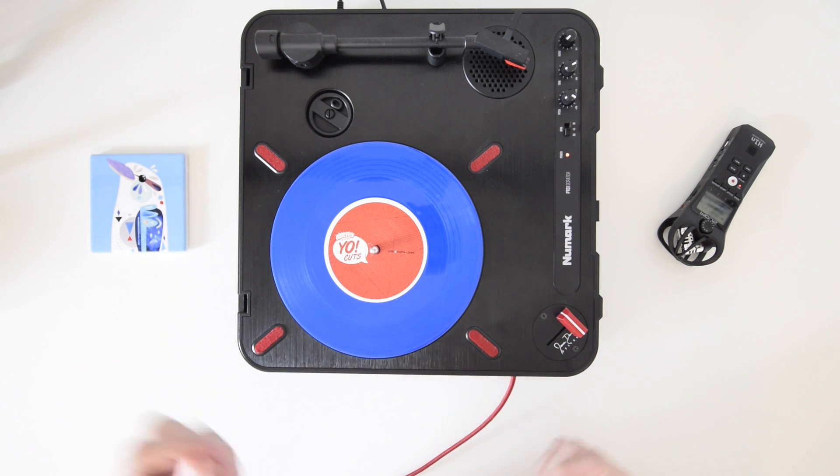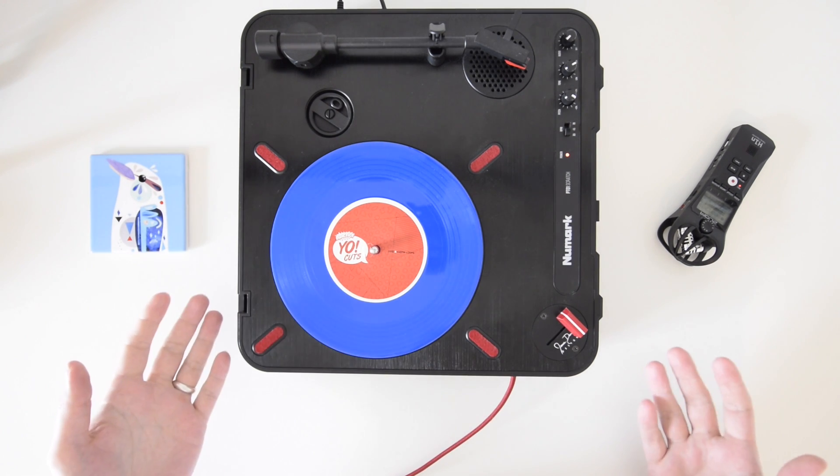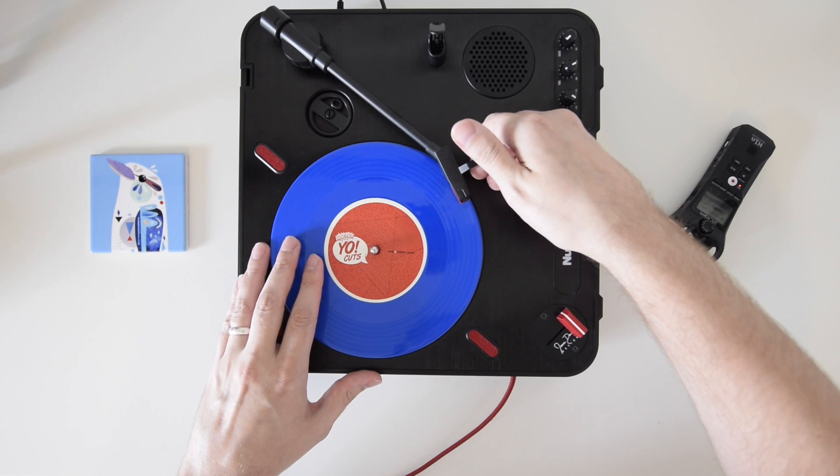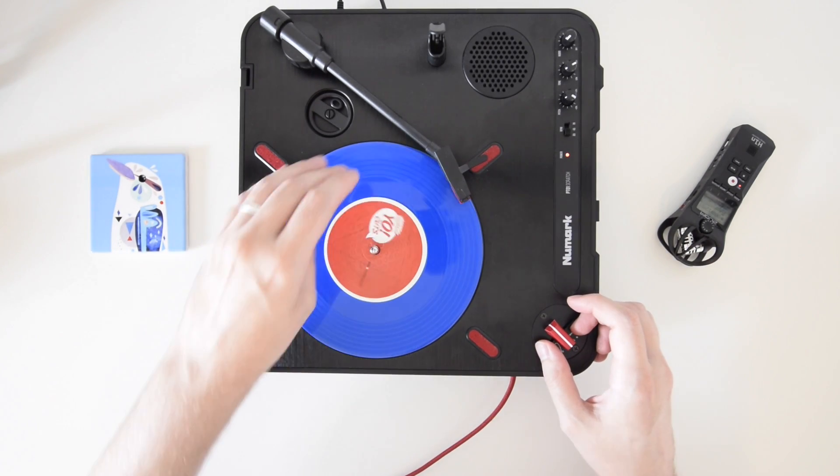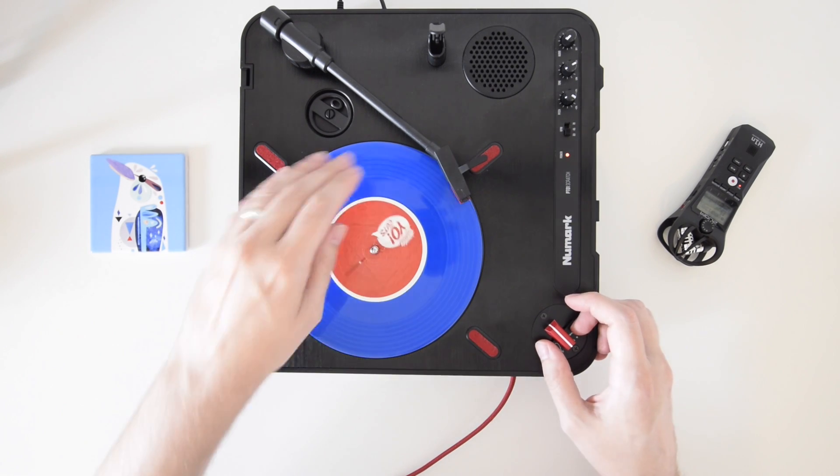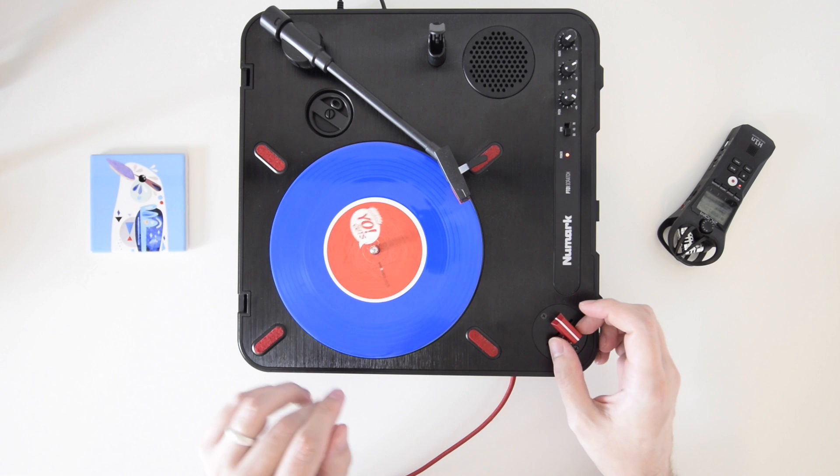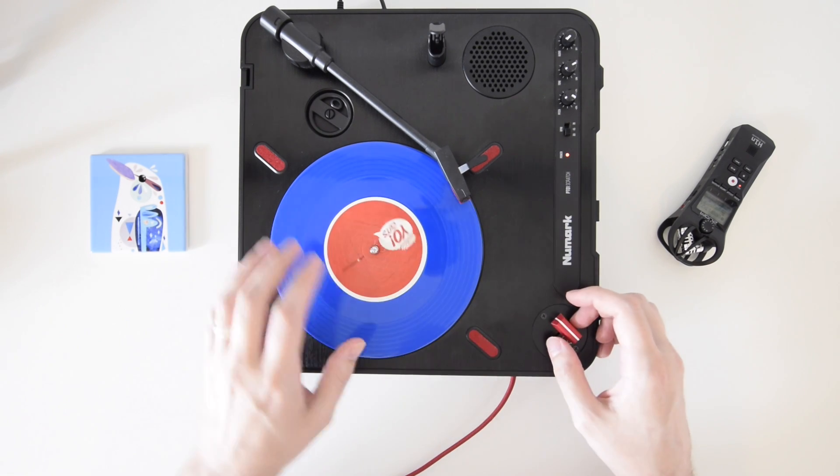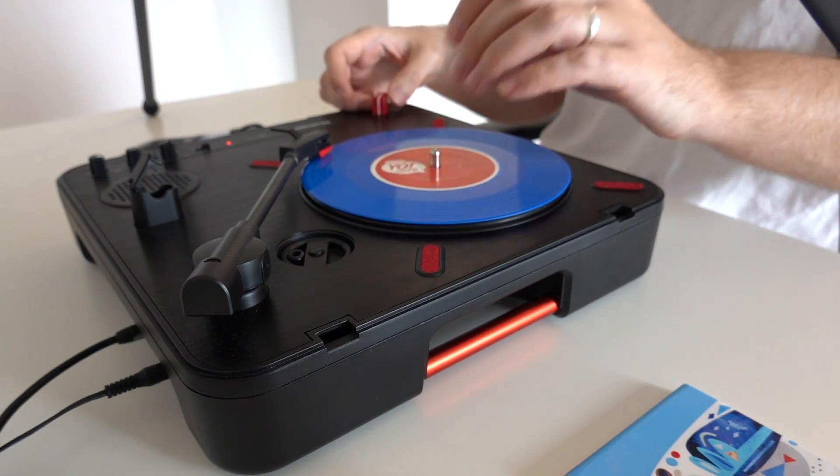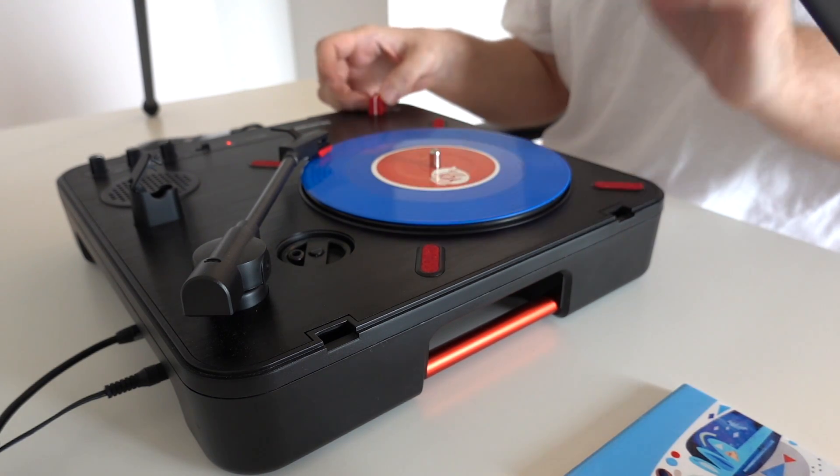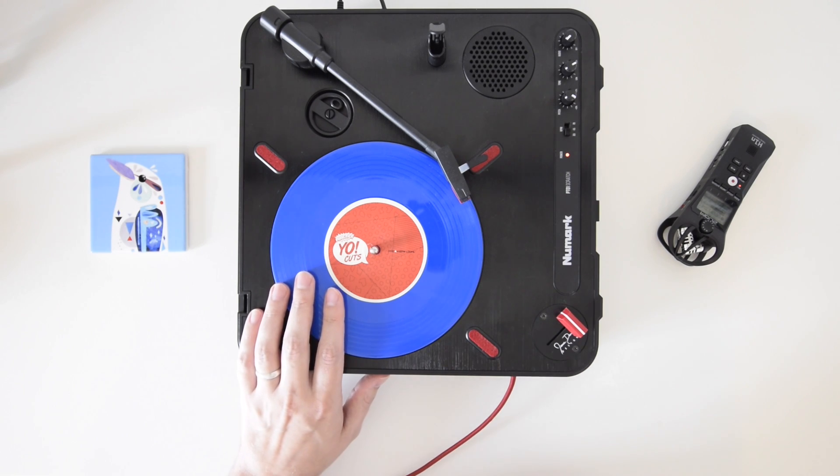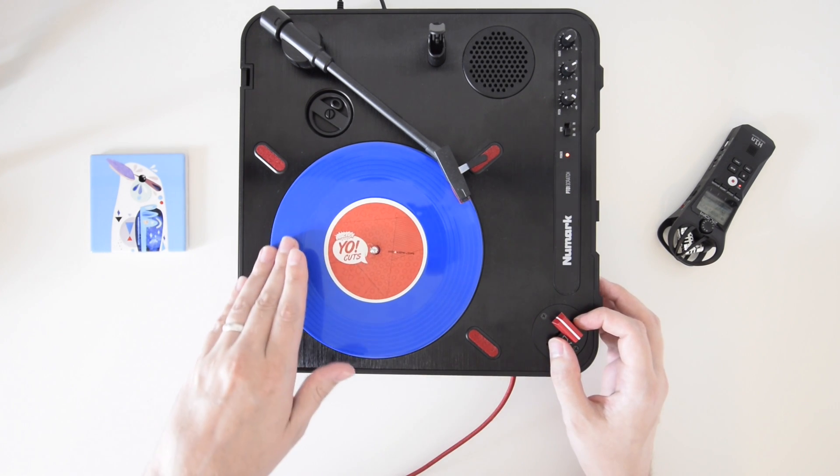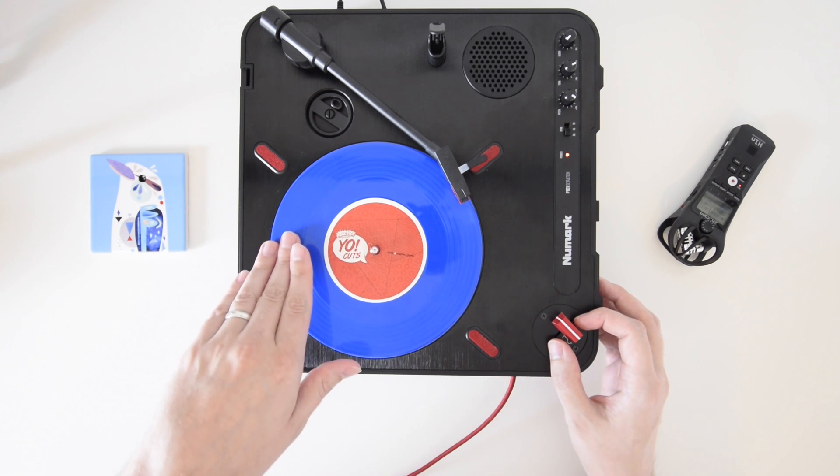Now when it comes to scratching the first thing you're gonna want to do is find a sample that you want to scratch and then find out where that sample starts or begins on the record. So let me show you what that looks like. So I want to scratch this R sound and one of the fundamentals of scratching, one of the basics, is just being able to play a sample and then bring it back to the start of the sample. So as you can see the beginning of this R sample is just about here.